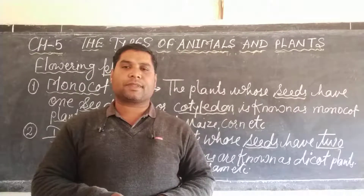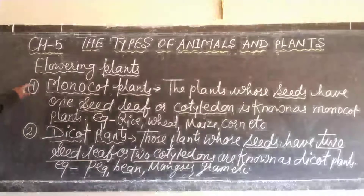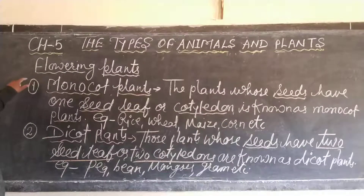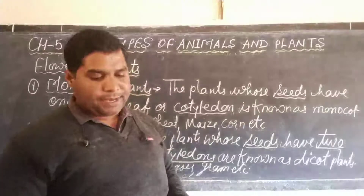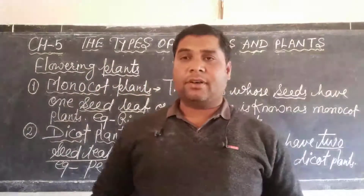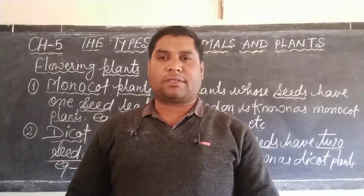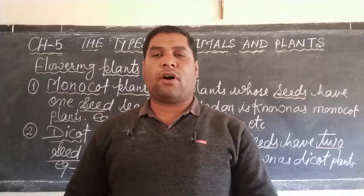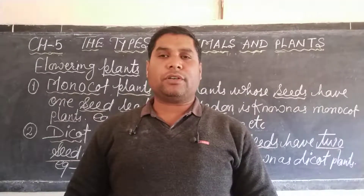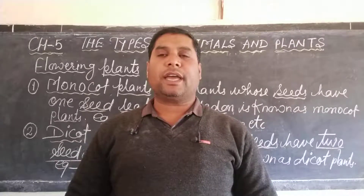So dear students, these are the characteristics of flowering plants — monocot plants and dicot plants. Please read the topic of Chapter 5, Flowering Plants, and learn the characteristics of monocot and dicot plants with examples.